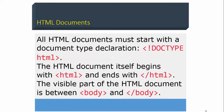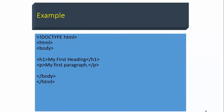The visible part of the HTML document is shown in an example: doctype HTML, then HTML tag, then body tag, then you have a first heading, then you have a paragraph, then start paragraph, then closing body and closing HTML tags.